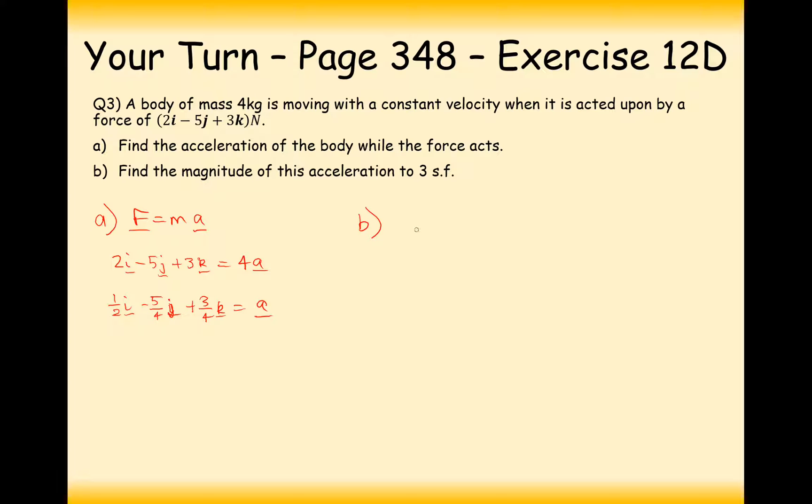Part B is find the magnitude of this. When you hear magnitude, just think Pythagoras distance. So half squared, add 5 over 4 squared, add 3 over 4 squared.